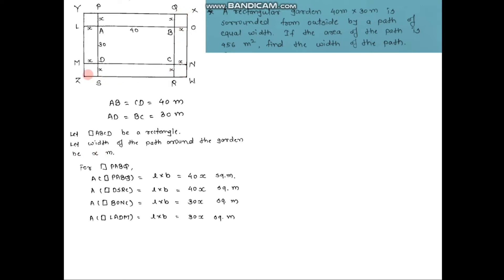By having this path of width x meters, we have got four quadrilaterals: quadrilateral PABQ, quadrilateral TSRC, quadrilateral BONC, and quadrilateral LADM. As we can see, all these four quadrilaterals are rectangles.